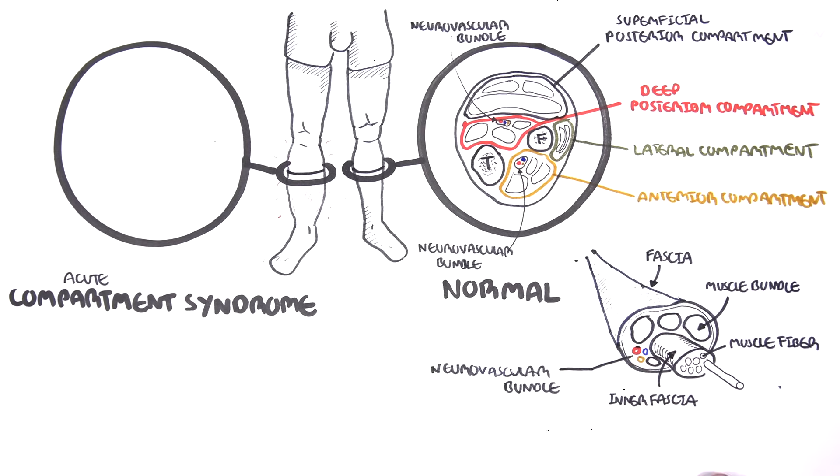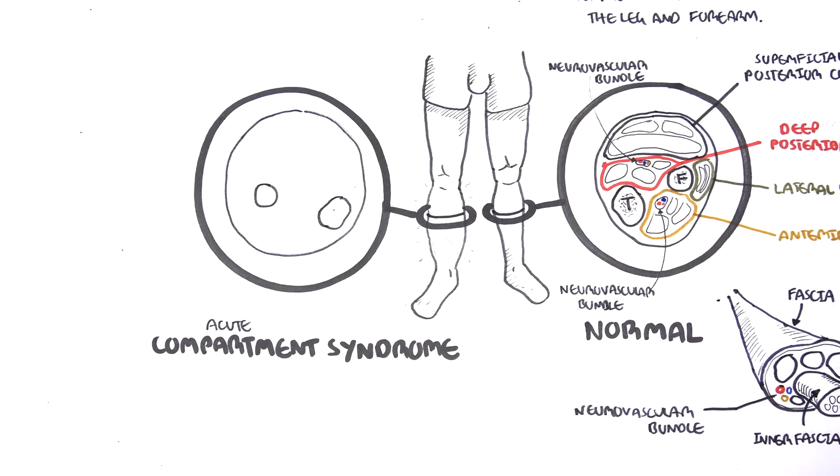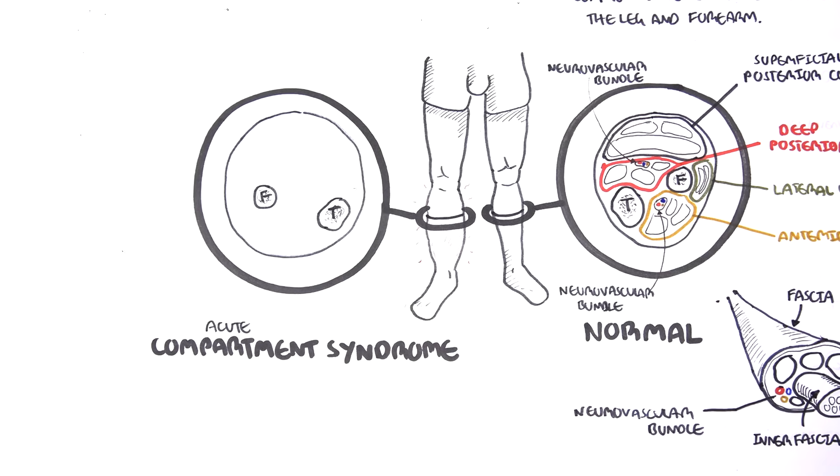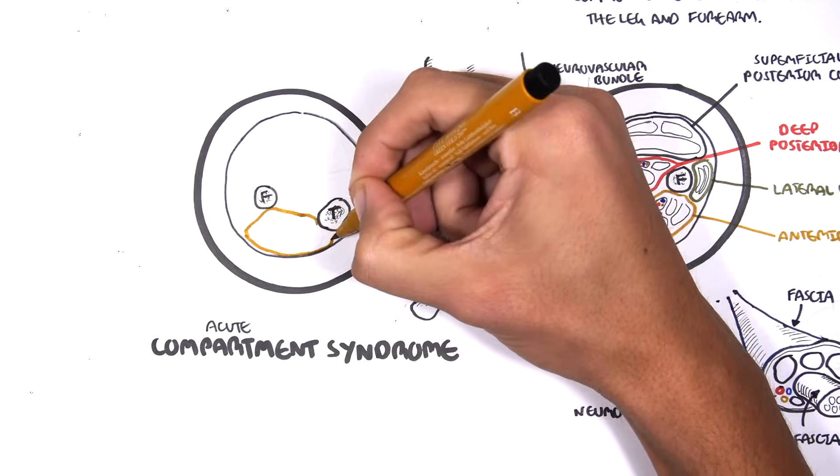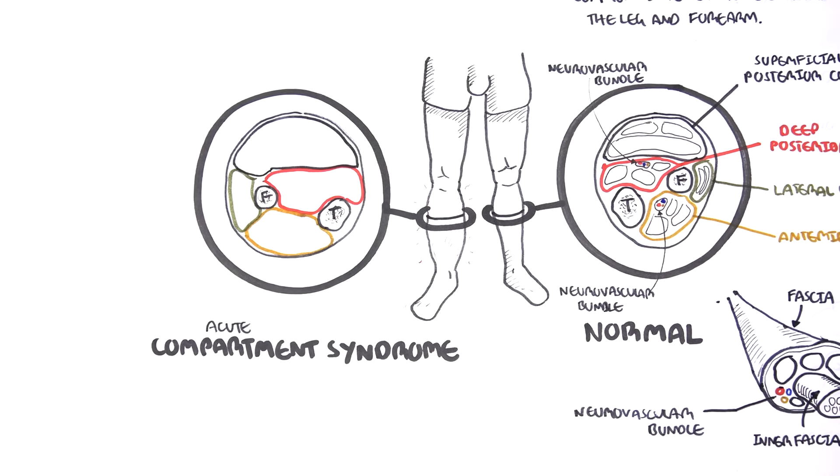In acute compartment syndrome, there is a build up in pressure in one or more compartments of a particular limb, in this case the leg. Here is a diagrammatical representation of all the compartments in the leg swelling up because of the increase in pressure.